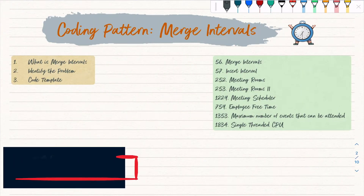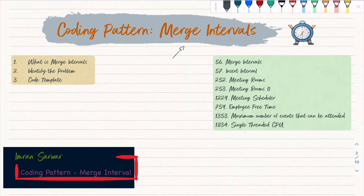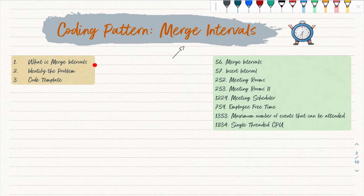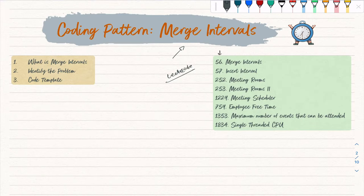Hello! Today we are going to talk about the coding pattern 'Merge Intervals'. After this video you will be quite proficient to identify any problem related to merge intervals and solve it easily. On the left side I have mentioned our flow: first we'll look at what merge interval is, then identify the problem, then look for the code template. On the right side I have mentioned a few LeetCode questions with their IDs and descriptions. In the next coming videos I'm going to solve them using the same coding template.